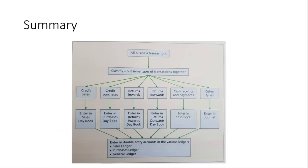Here's a perfect summary diagram: at the top are the different transactions of a business. These transactions are classified and ones that are the same are grouped together — for example, credit sales go into the Sales Day Book. Once we've done all the Books of Prime Entry, we can then put them into the double entry accounts with various ledgers: the Sales Ledger, Purchases Ledger, and the General Ledger. That's pretty much what Books of Prime Entry are. If you found this video useful, give it a like and subscribe to watch more videos like this every week — thank you for watching.